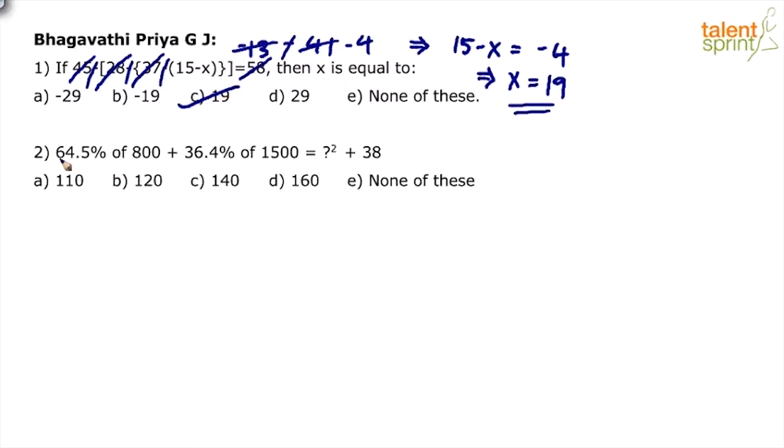64.5% of 800 plus 36.4% of 1500 equals question mark squared plus 38. It's not difficult to find 64.5% of 800 if you've practiced calculations. Just break it up: 64.5% is 50% plus 10% plus 4% plus 0.5%. So 50% is 400, 10% is 80, 4% is 32, and 0.5% is 4.